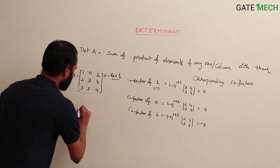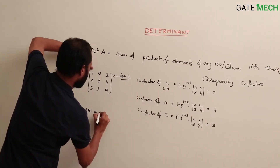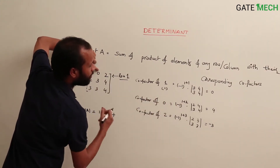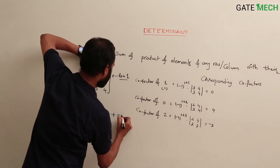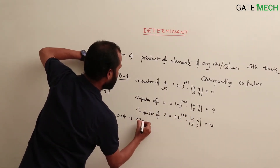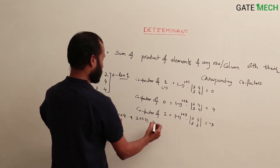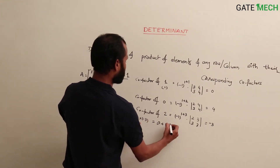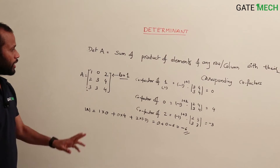Now the determinant, using row one: 1 into 0, plus 0 into 4, plus 2 into (−3). That gives 0 + 0 + (−6) = −6. So the determinant of A is −6.